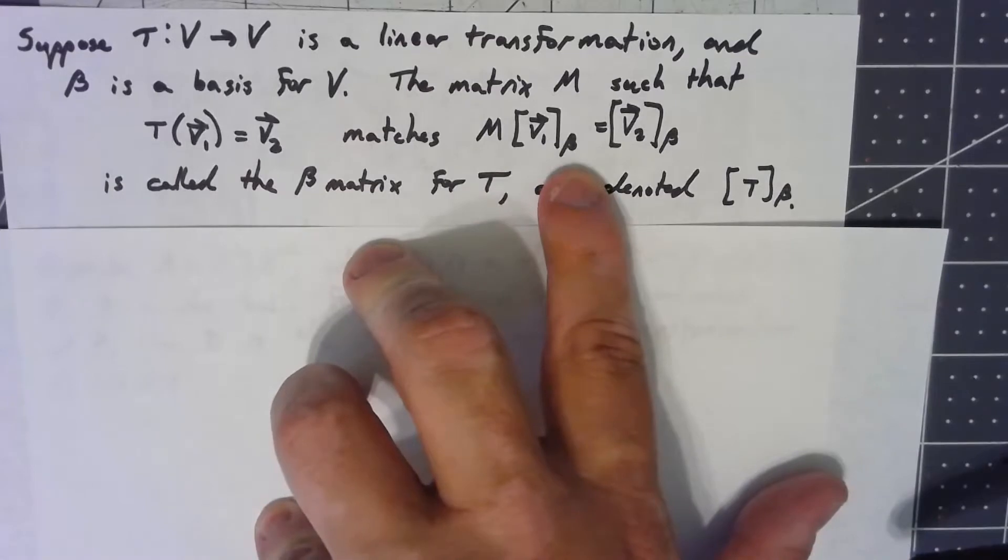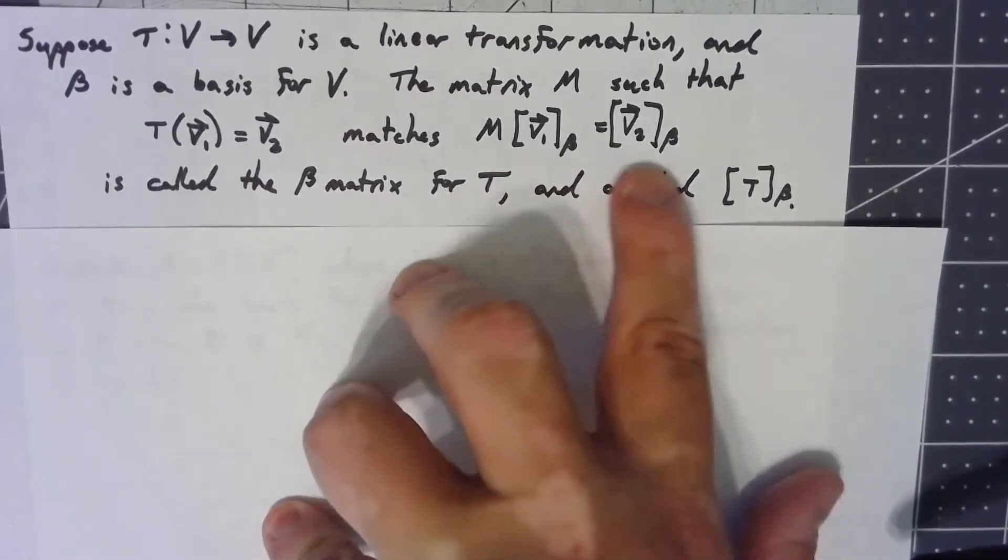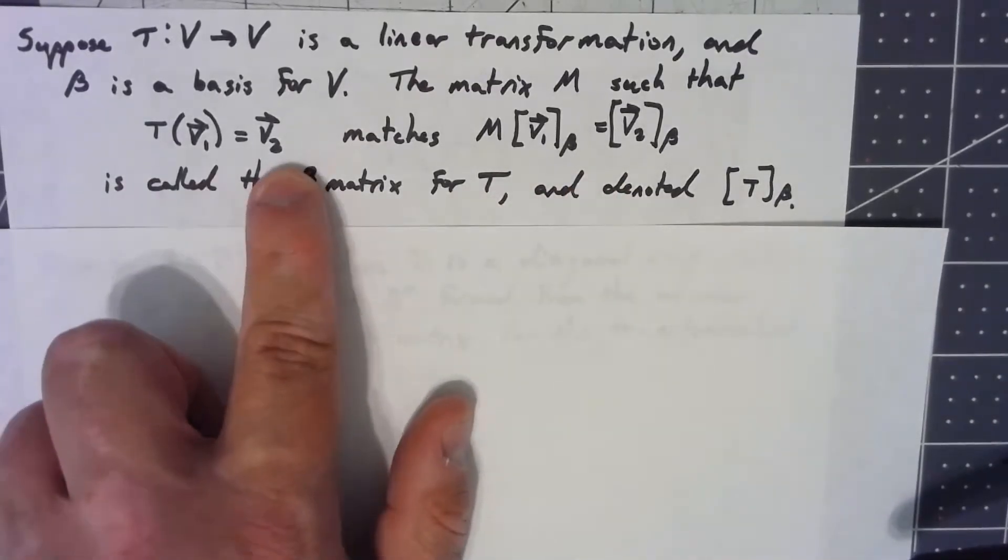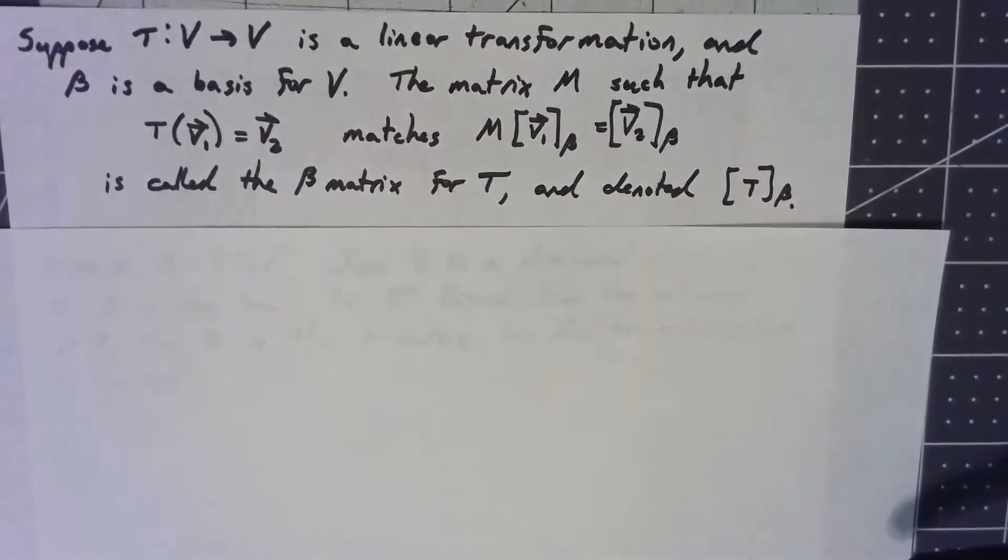Multiplication times the coordinate vector with respect to that basis gives me the coordinate vector of the transformed vector with respect to that same basis.